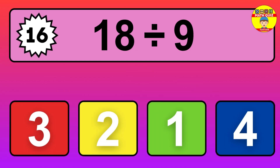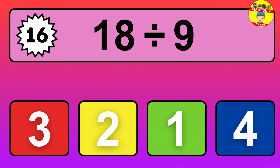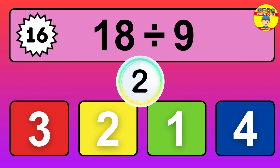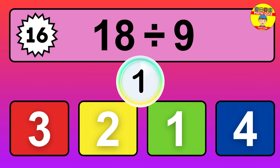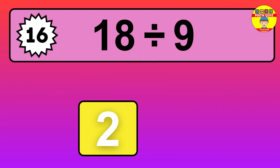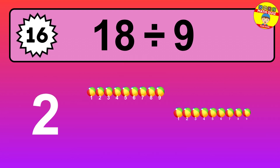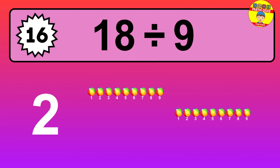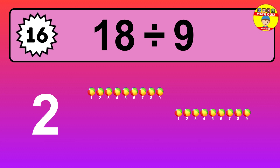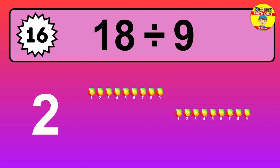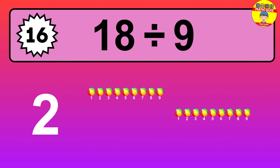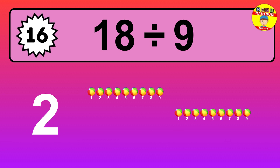18 divided by 9 is... time to think. Let's go to the solution. Divide the number 18 by 9. Each group contains 9 units, so dividing 18 by 9 results in 2 equal groups. Thus, the result is: 18 divided by 9 equals 2.